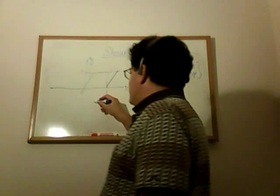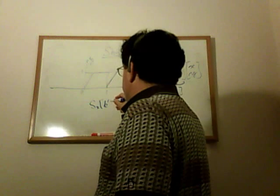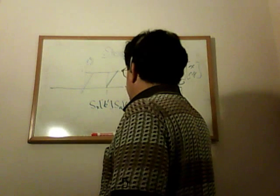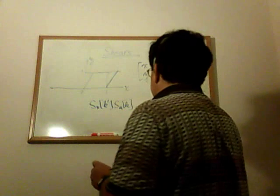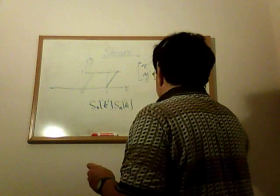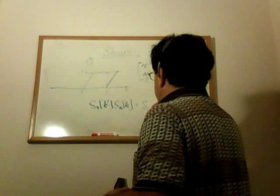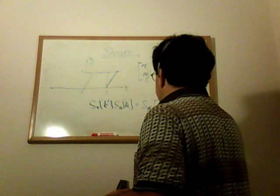And shears have a nice property that if you multiply them, so if you multiply a shear with a parameter of K, times a shear with a parameter of K prime, and remember, multiplication always appears from the left,